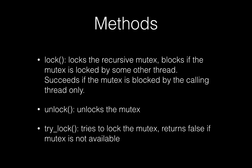Just like mutex, recursive mutex has lock, unlock, and try_lock methods. With lock, when you try to lock the recursive mutex, the program blocks if the mutex is locked by some other thread, but if the same mutex is tried to be locked by the same thread, the call is successful. Similarly, with try_lock, if the mutex is not available, try_lock will return false.